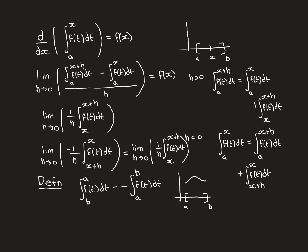Why define it this way? It works beautifully for the second case where h is less than 0. In that case x plus h is the lower bound and x is the upper bound. We can write those bounds the wrong way round — bringing x plus h to the top and x to the bottom — and swallow the minus sign using this rule. This becomes the limit as h approaches 0 of 1/h times the integral from x to x plus h of f(t) dt — the same as the h > 0 case. With this definition, we can write the simplification of this limit as one unified expression for both positive and negative h.